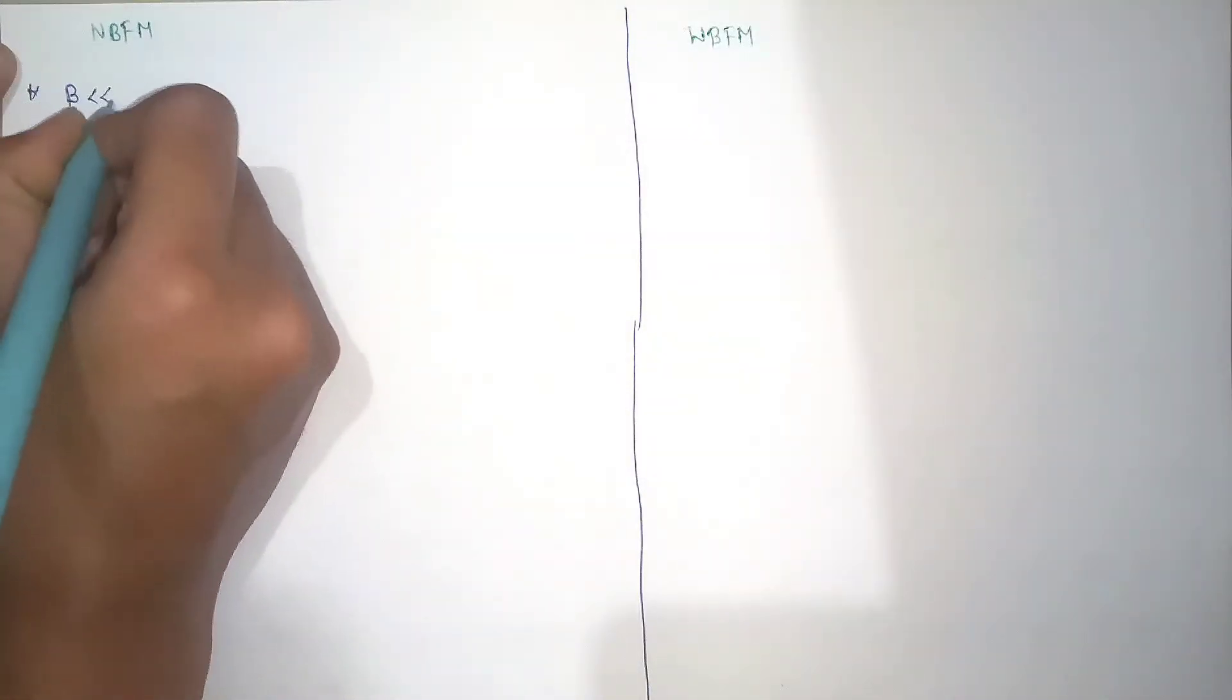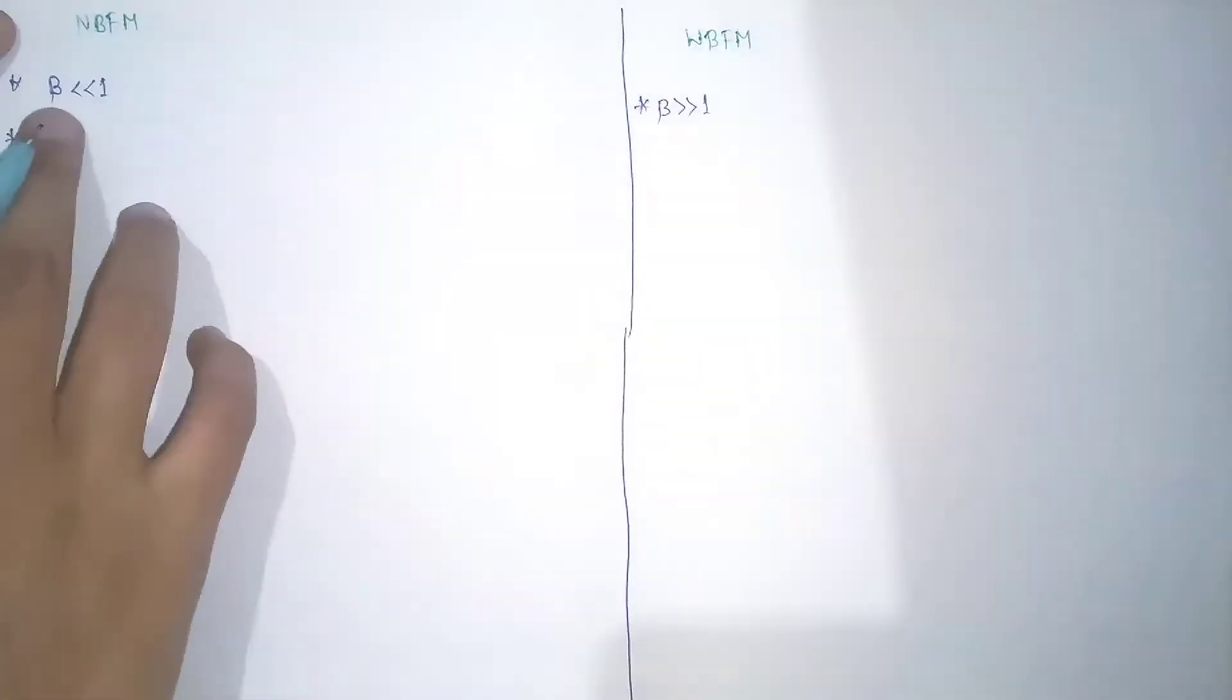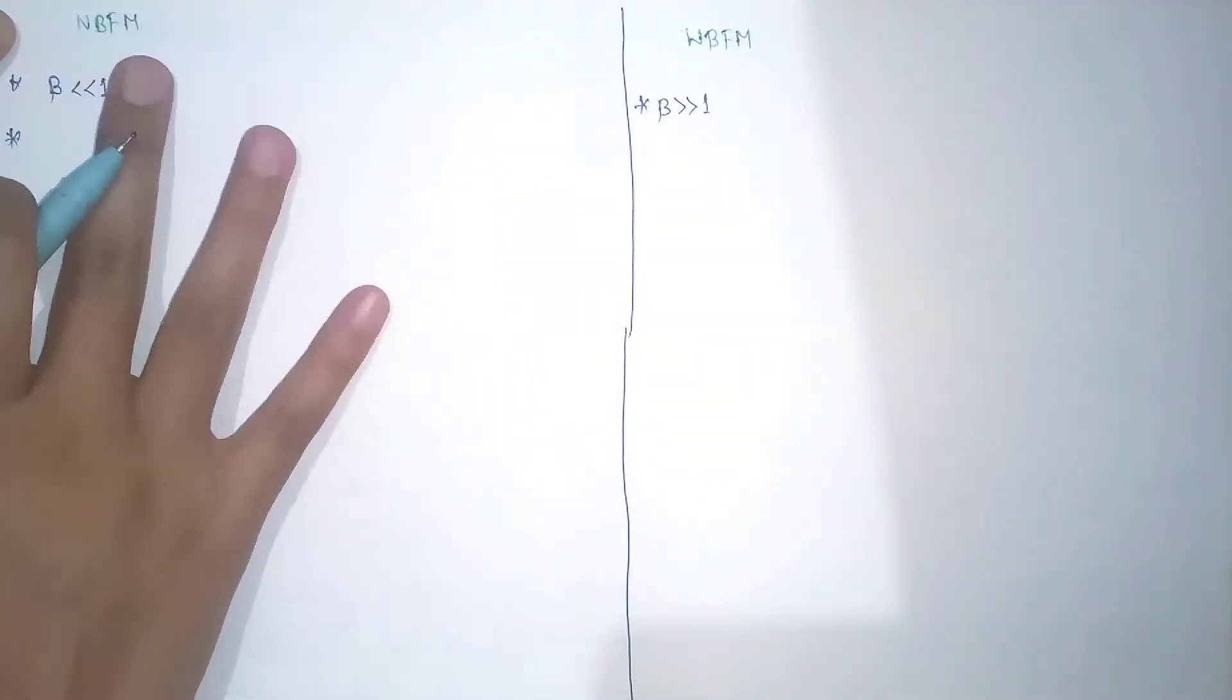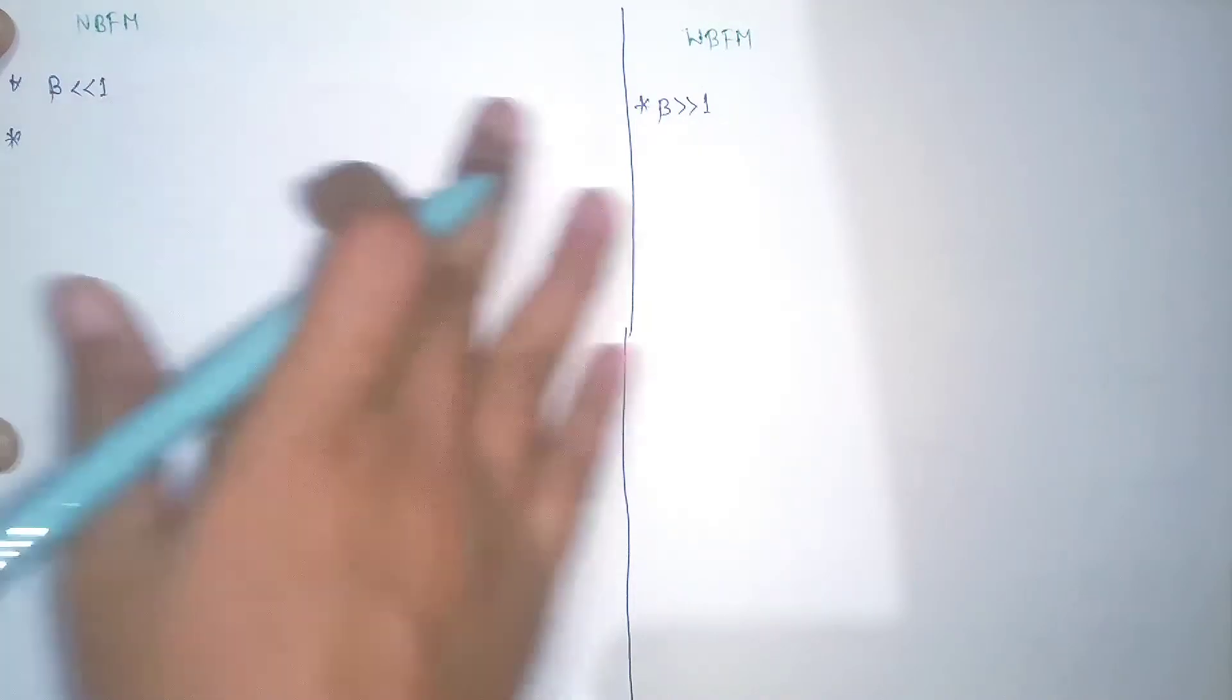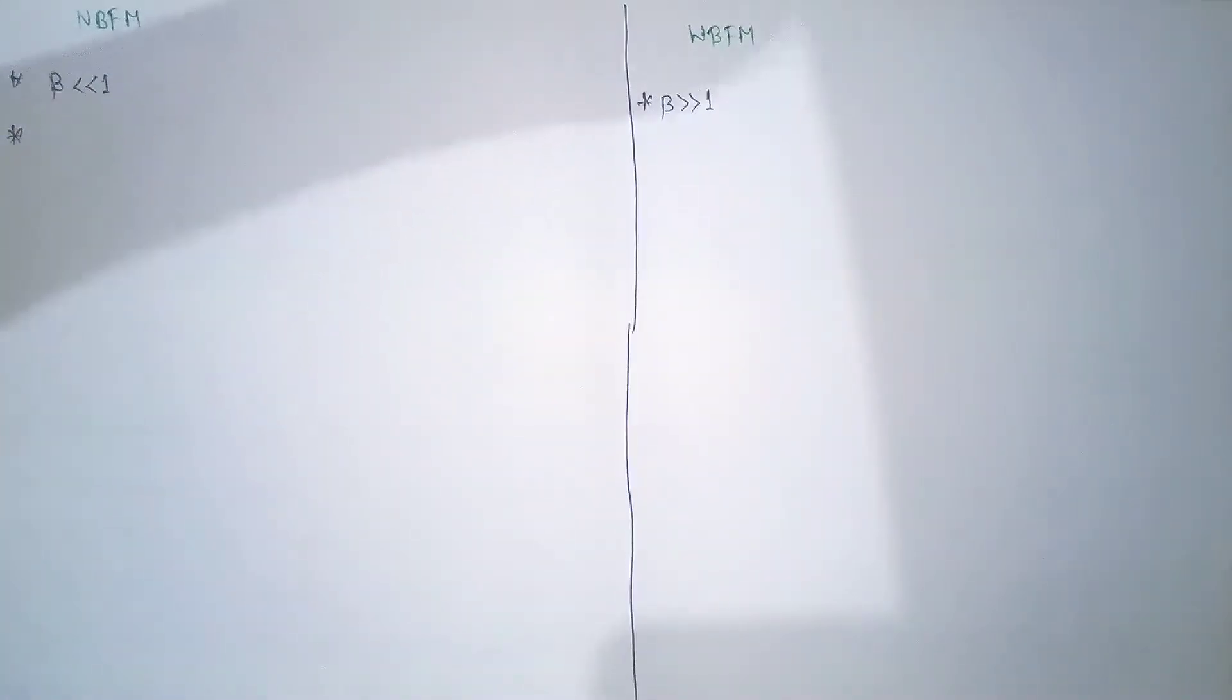The first point which we can write about narrowband FM is that the beta will be very less than one. So the beta is the modulation index. Here in narrowband FM, beta is very less than one, and here in wideband FM the beta is very greater than one.